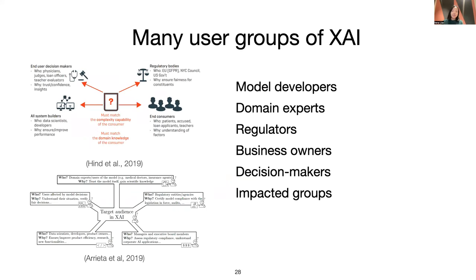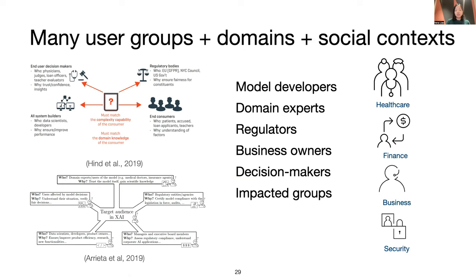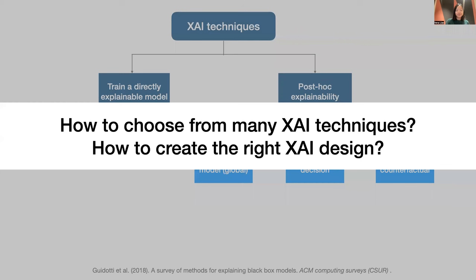I hope this running example demonstrates that different kinds of explanation are required for different goals. Our consideration for the best solution would further expand if we combine these many goals with different types of users, different domains, and different social contexts. With this very complex design space, how do we choose from the many different XAI techniques, and ultimately how do we create the right XAI design?